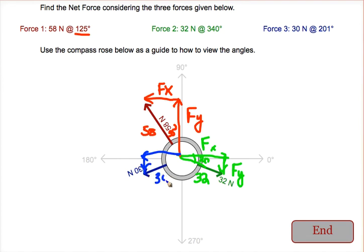30 is the hypotenuse. The angle is 201, which is 21 degrees past the 180 mark. We use that to get the force in the x and the force in the y.